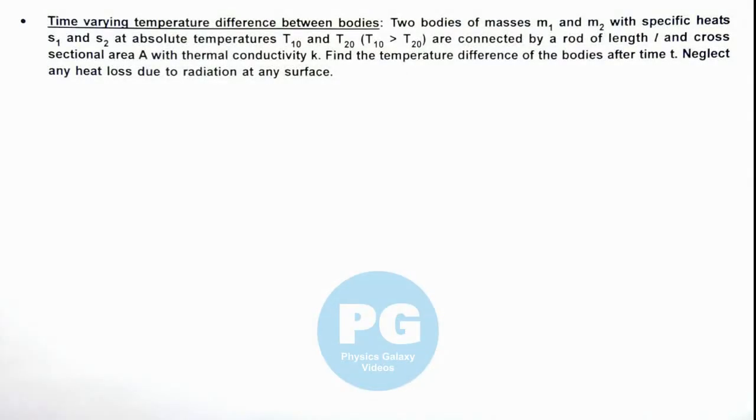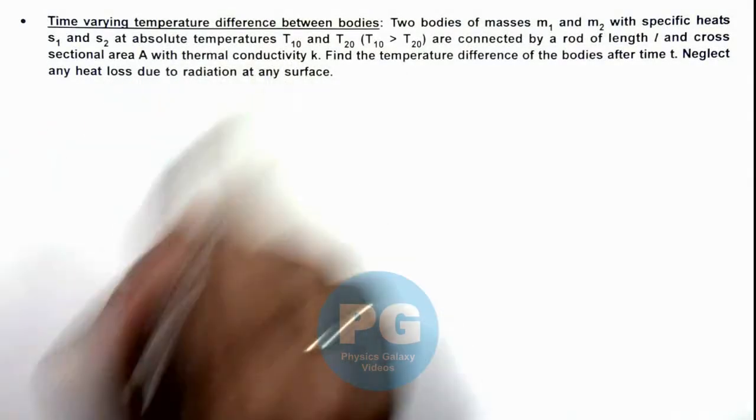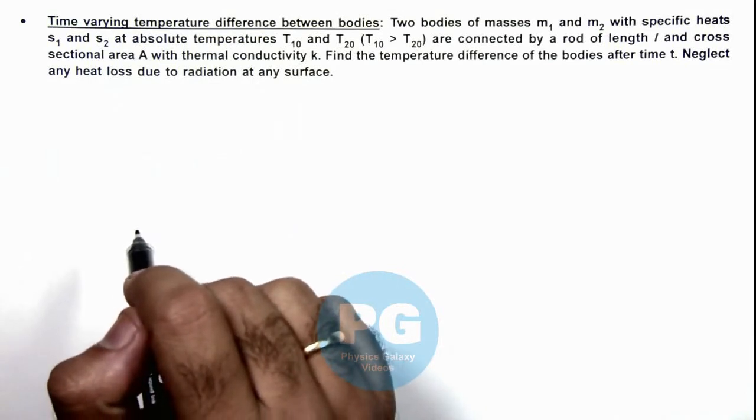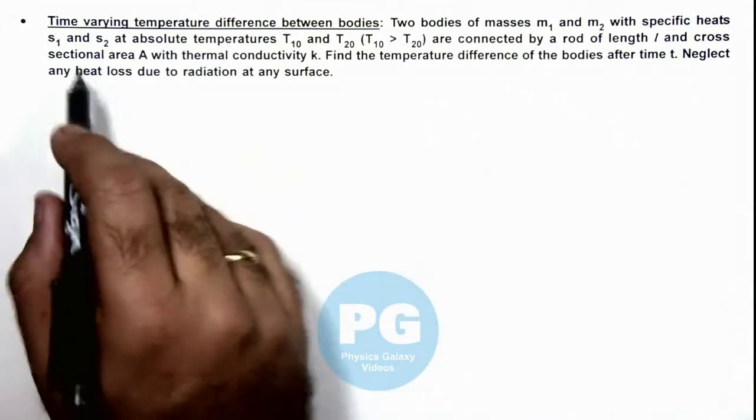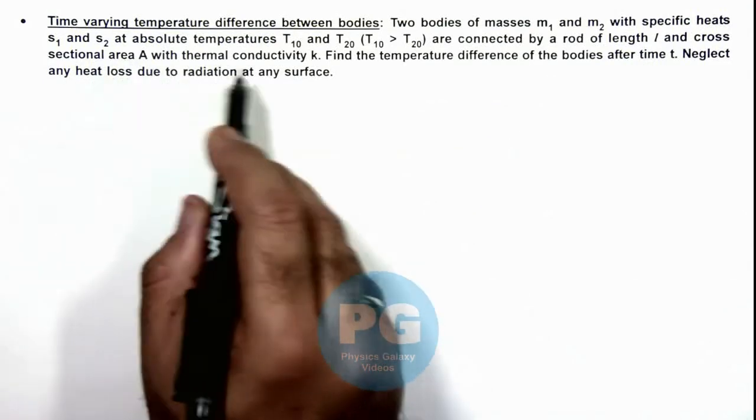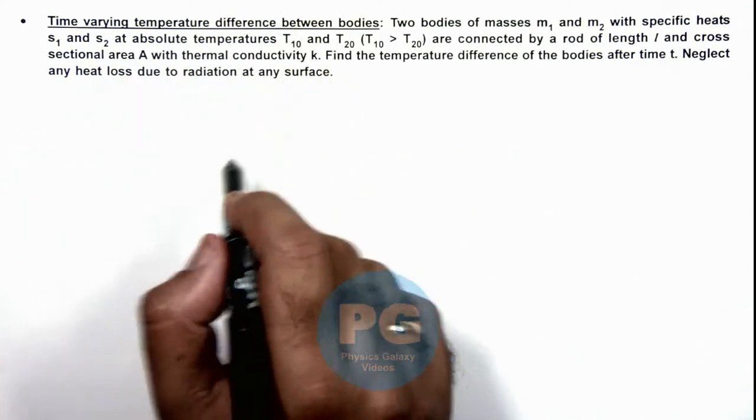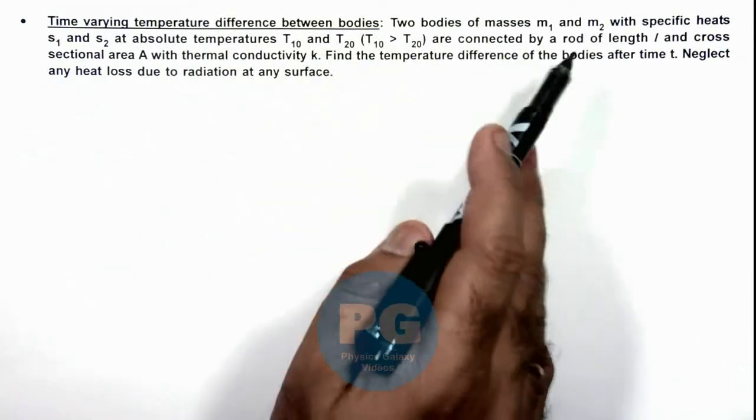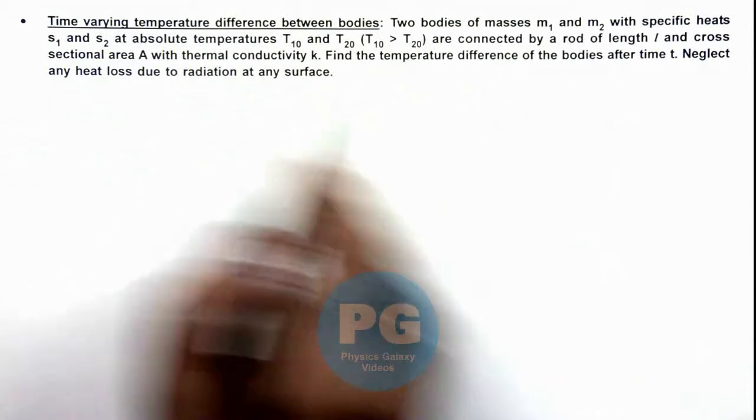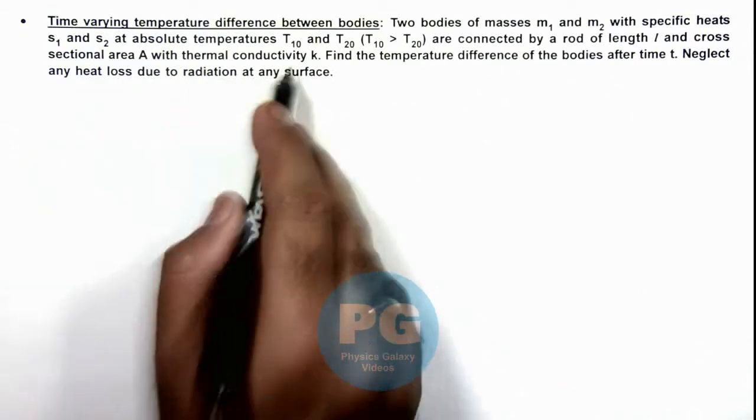In this illustration we'll discuss time varying temperature difference between bodies. We are given two bodies of masses m₁ and m₂ with specific heats s₁ and s₂ at absolute temperatures T₁₀ and T₂₀, where the first is higher than the other. They are connected by a rod of length l and cross sectional area A with thermal conductivity k.